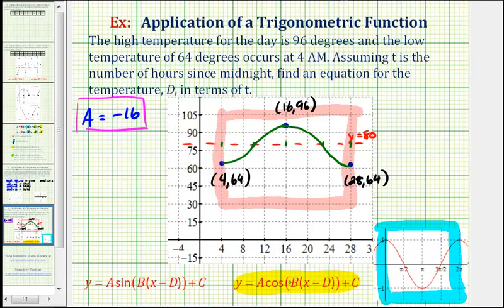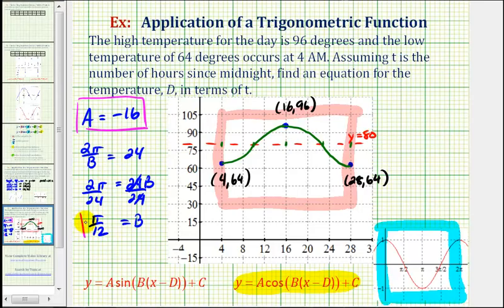Next, the value of b affects the period. And because one day is 24 hours, our period is 24 hours, which means two pi divided by b must equal 24. So now we need to solve this for b. So we'll multiply both sides by b. That'll give us two pi equals 24b. Divide both sides by 24. And we have b equals, this would be one pi divided by 12, or pi over 12.